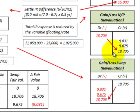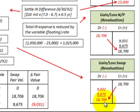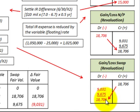In this case, we had a gain on our notes payable of $18,706, and an offsetting loss on the swap contract of $18,706.